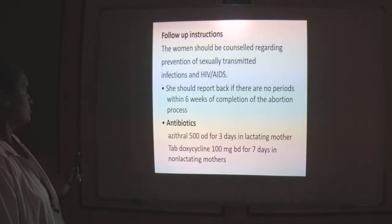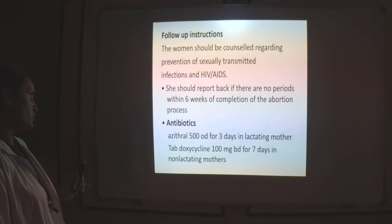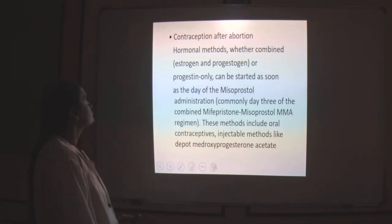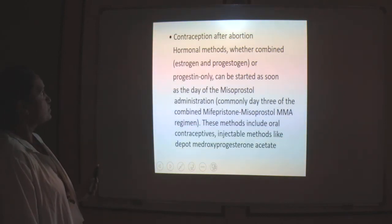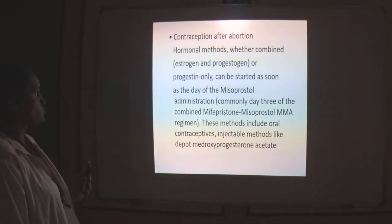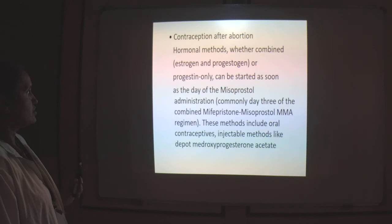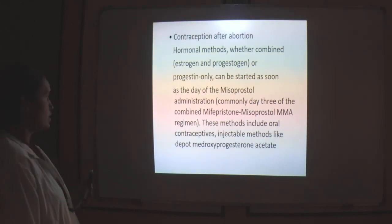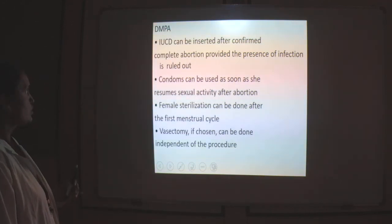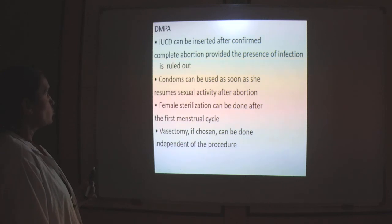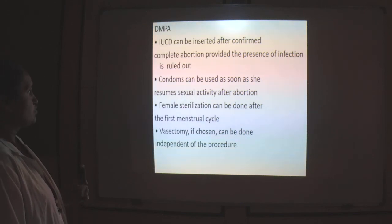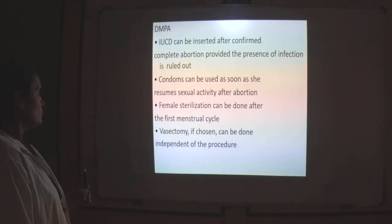Regarding antibiotics: if she is lactating, azithromycin 100mg once daily for three days; if non-lactating, doxycycline 100mg twice daily for seven days. For contraception after abortion: hormonal progestin-only methods can be started as early as the day of misoprostol administration. Other options include oral contraceptive pills, injectable methods, and DMPA. IUD can be inserted after confirming there is no infection. Condoms can be used as soon as she is sexually active after abortion, and female sterilization can be done after confirmation.